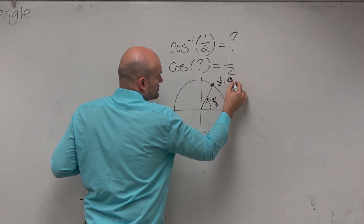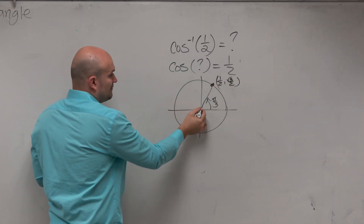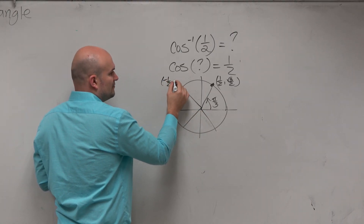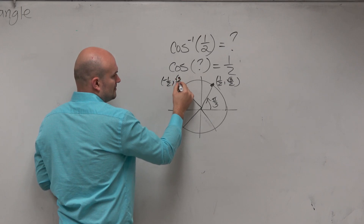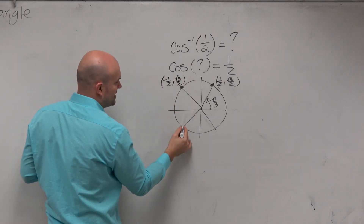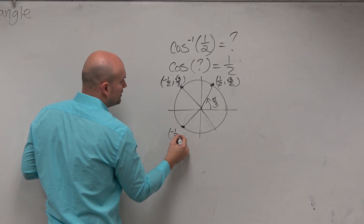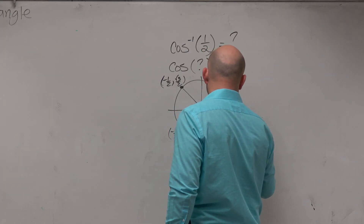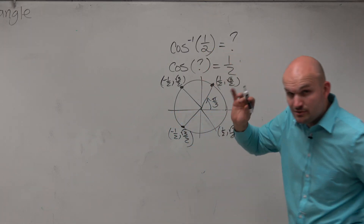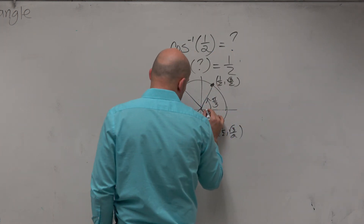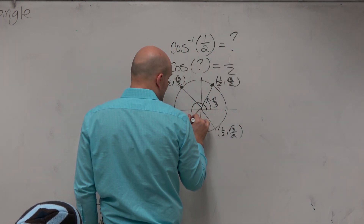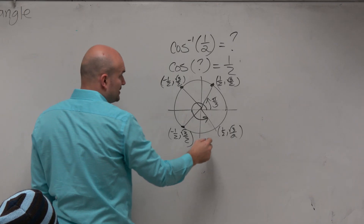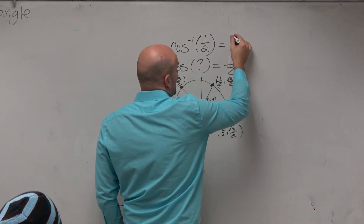1/2 comes with square root of 3 over 2. So this would be in the second quadrant — but that's negative 1/2, so we don't need to include that. Actually, there's only two answers, not four. There are two angles where cosine equals 1/2, and the coordinate is 1/2 comma square root of 3 over 2. So the only two angles on the unit circle that satisfy this are pi over 3 — we could say the answer is pi over 3.